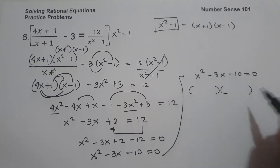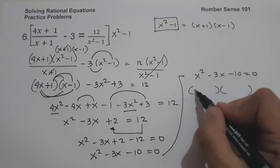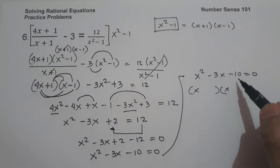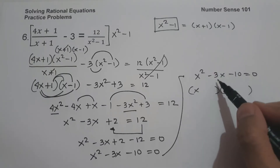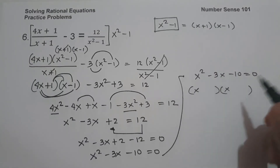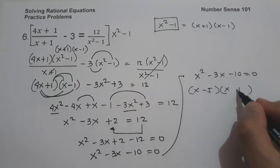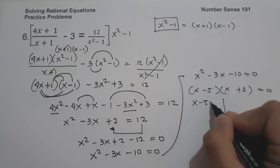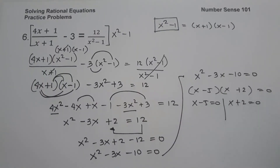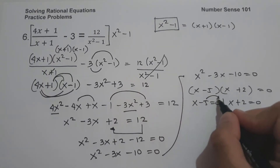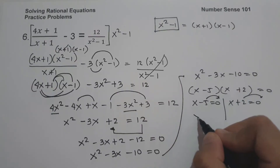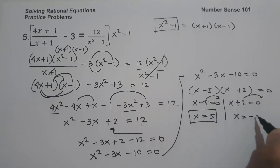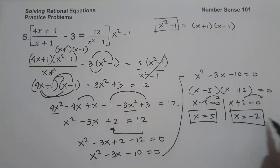So let us factor this. The factors of x squared are x and x. We need two numbers that multiply to negative 10 and add to negative 3: that is negative 5 and positive 2. Setting each factor to zero: x minus 5 equals 0 and x plus 2 equals 0. Therefore x equals positive 5 and x equals negative 2, and these will be our answers.